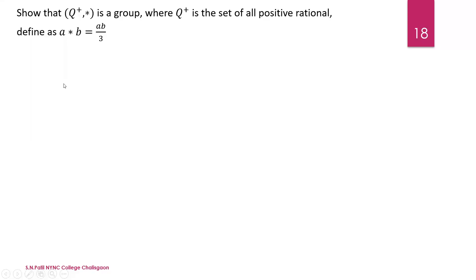Hello friends, my name is S.N. Patil. In this video lecture we discuss an example on group. The example is to show that Q+ star is a group, where Q+ is the set of all positive rationals and the operation is defined as a star b equals a into b divided by 3.